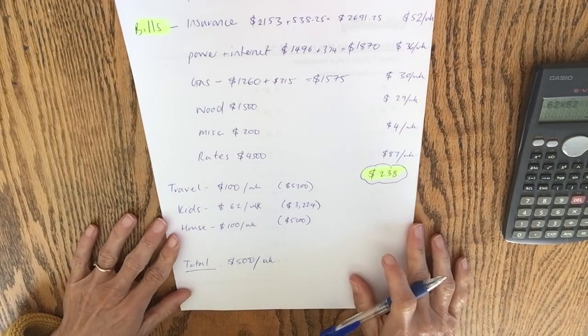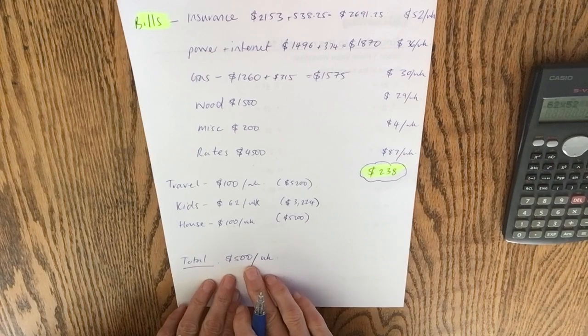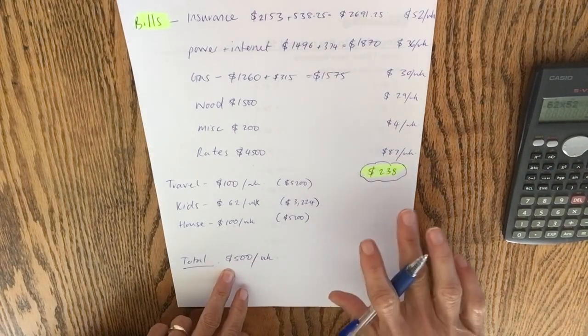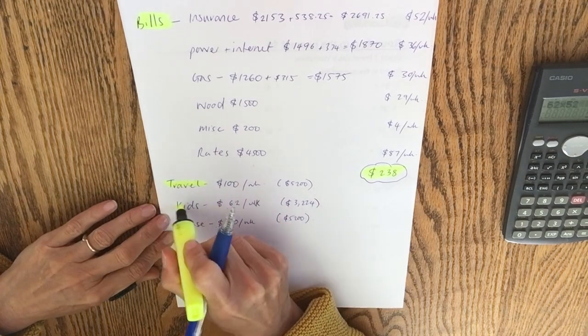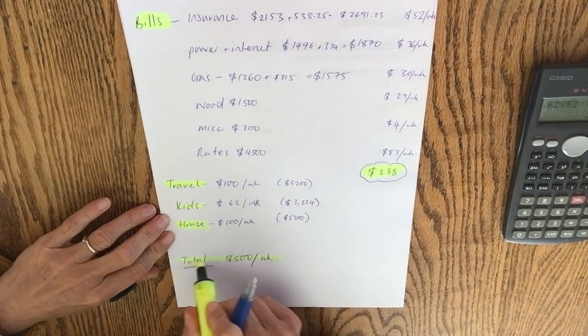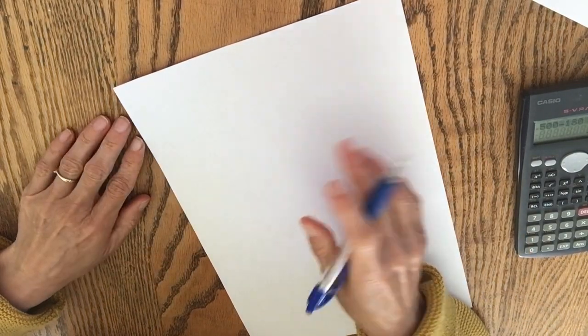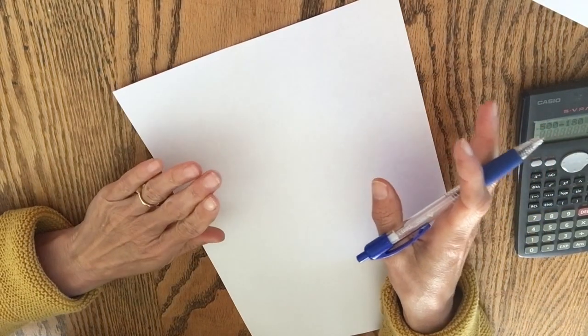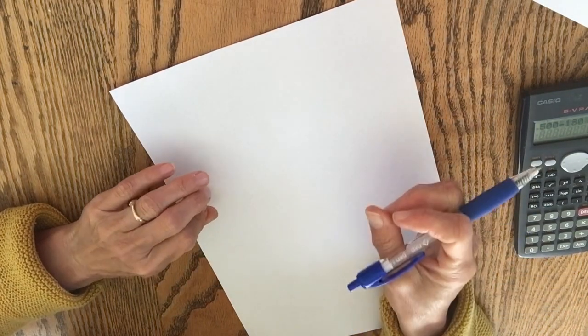There we go. So my total for bills is going to be $500 per week. Easy, right? How does that compare with your budget for the year? So $500, that's what stays in the bank. Let's do this a little bit clearer. Travel, kids, house, and total. So that's the main budget done. That's the money that's going to go automatically into various accounts every week, every pay, to make sure we can meet our obligations.